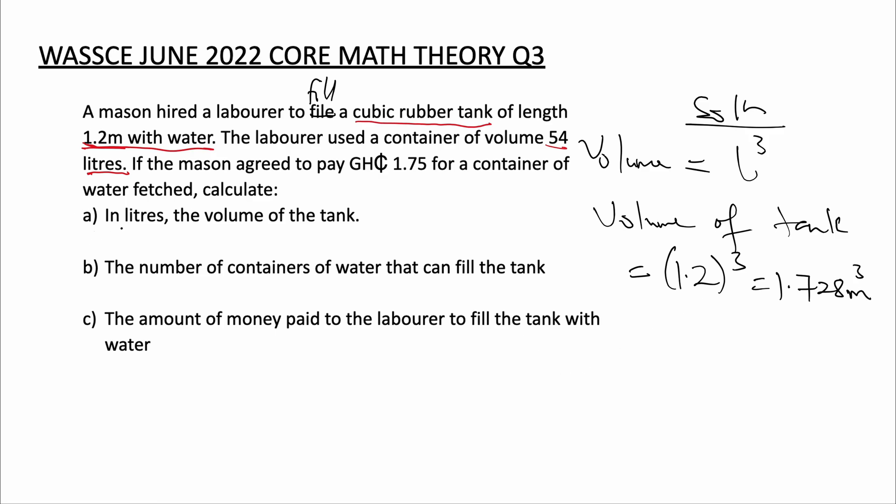And we are being asked to leave our answer in liters. So we have 1.728 meters cubed. We know that 1 meter cubed is equal to 1,000 liters. So meter cubed will cancel meter cubed. We have 1.728 times 1,000, and that would give us 1,728 liters. So the volume of our cubic rubber tank is 1,728 liters.